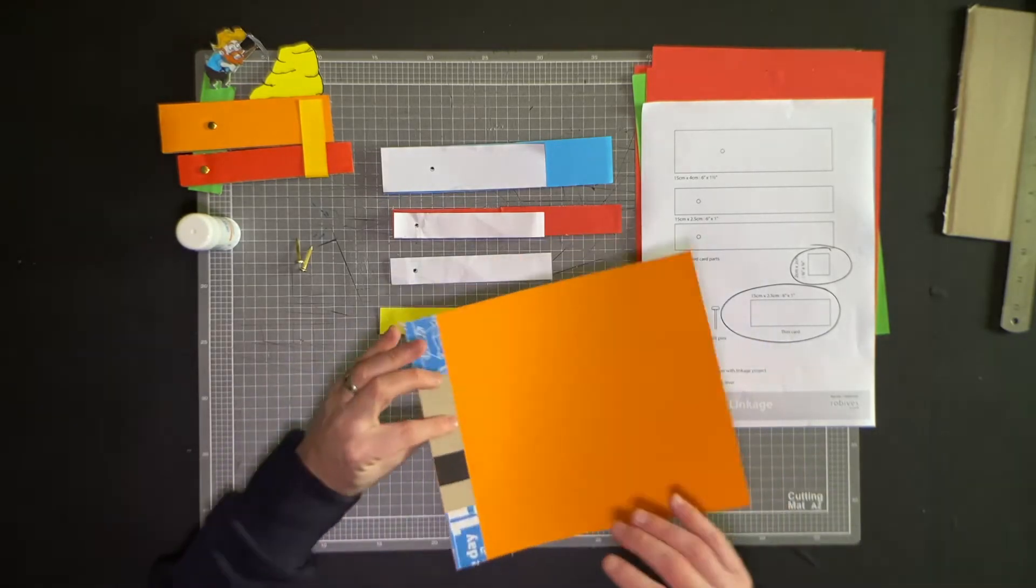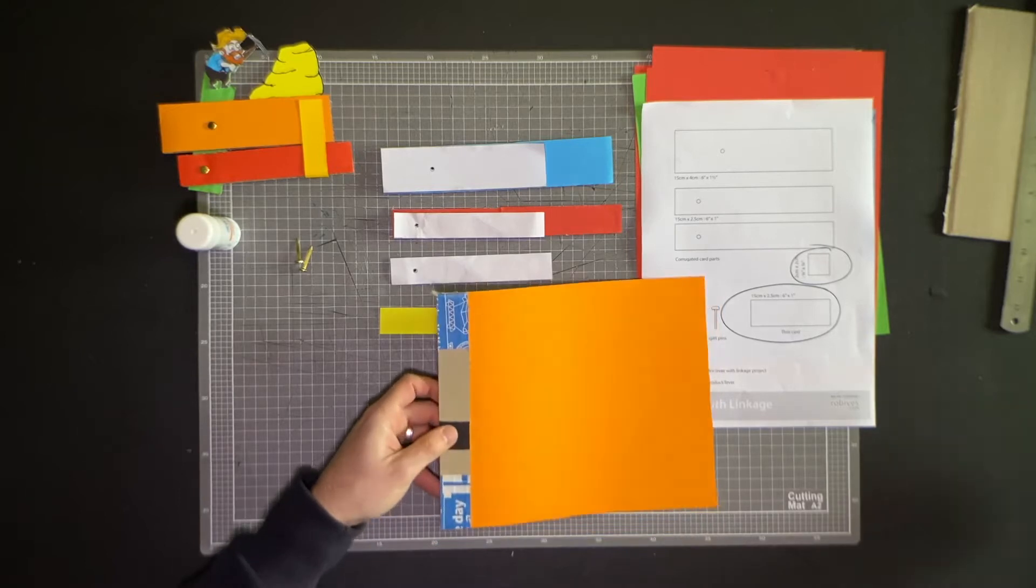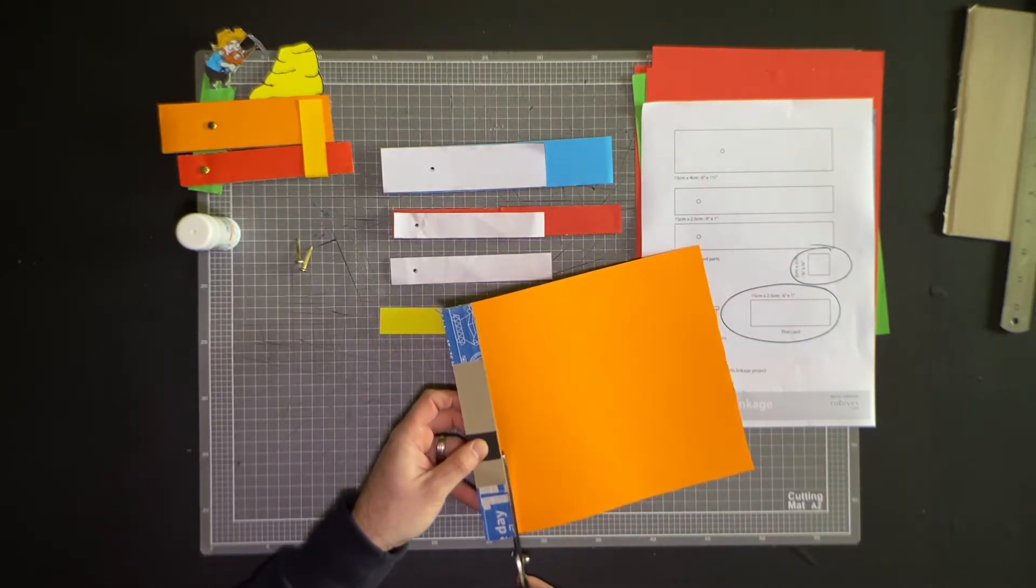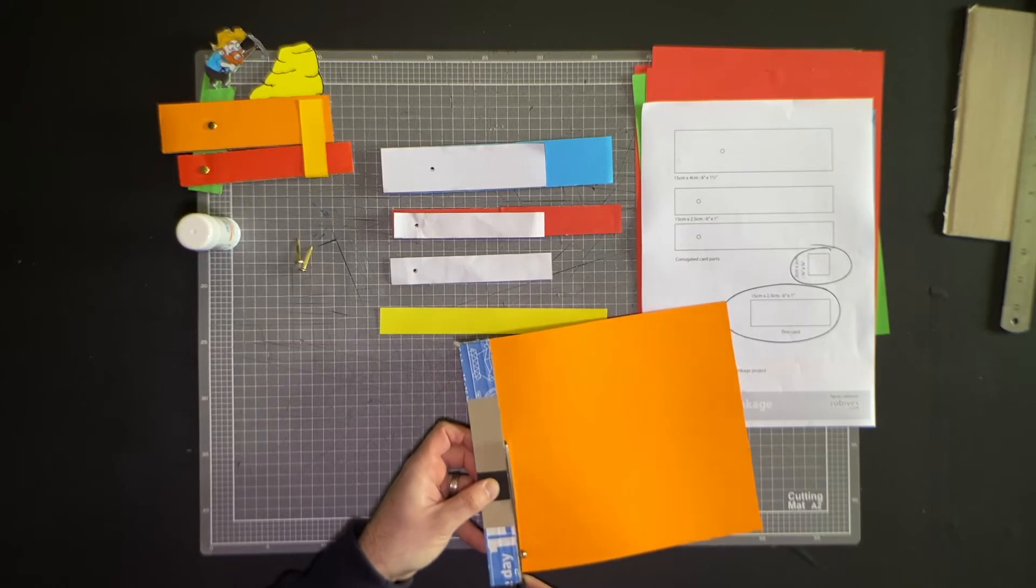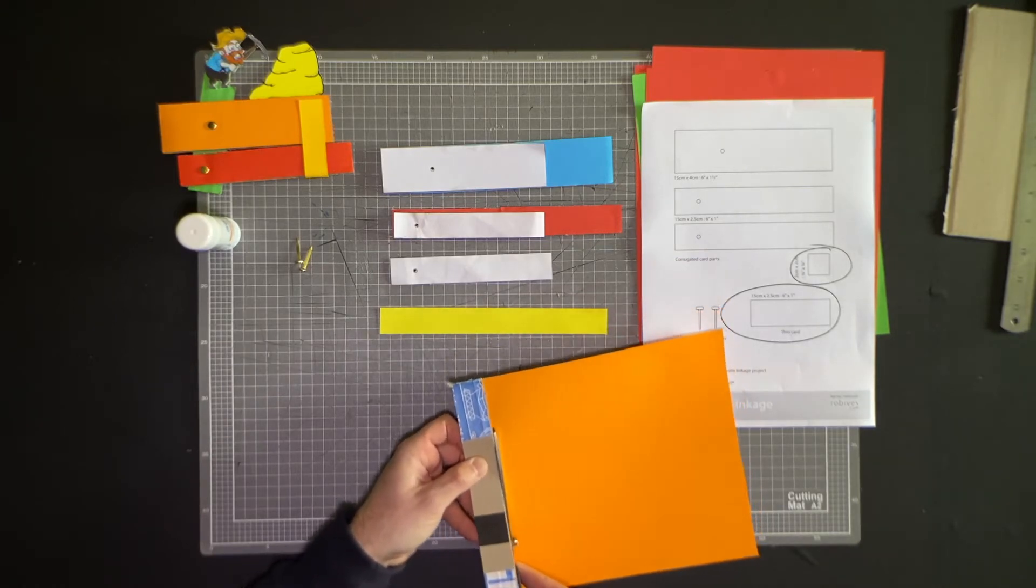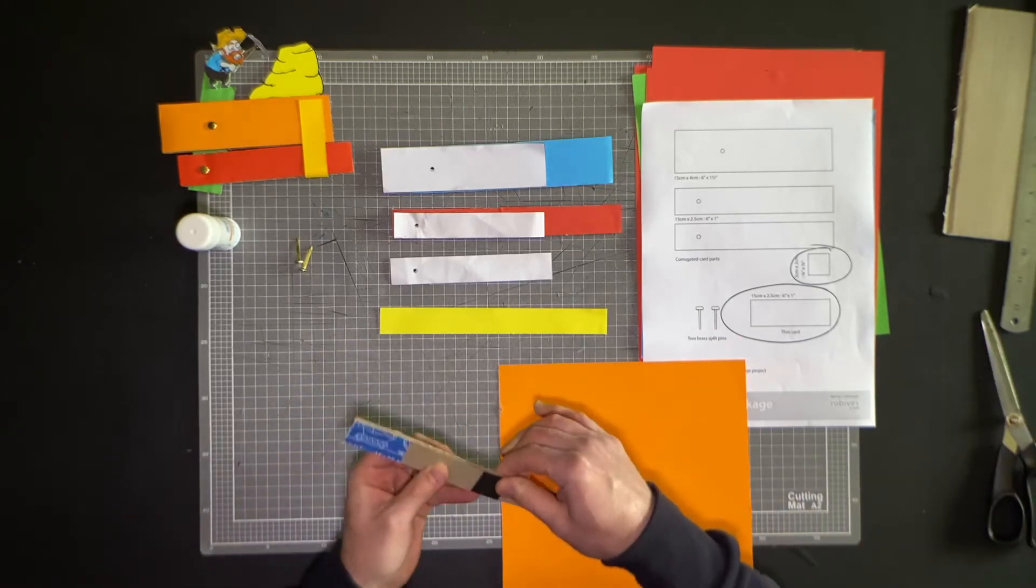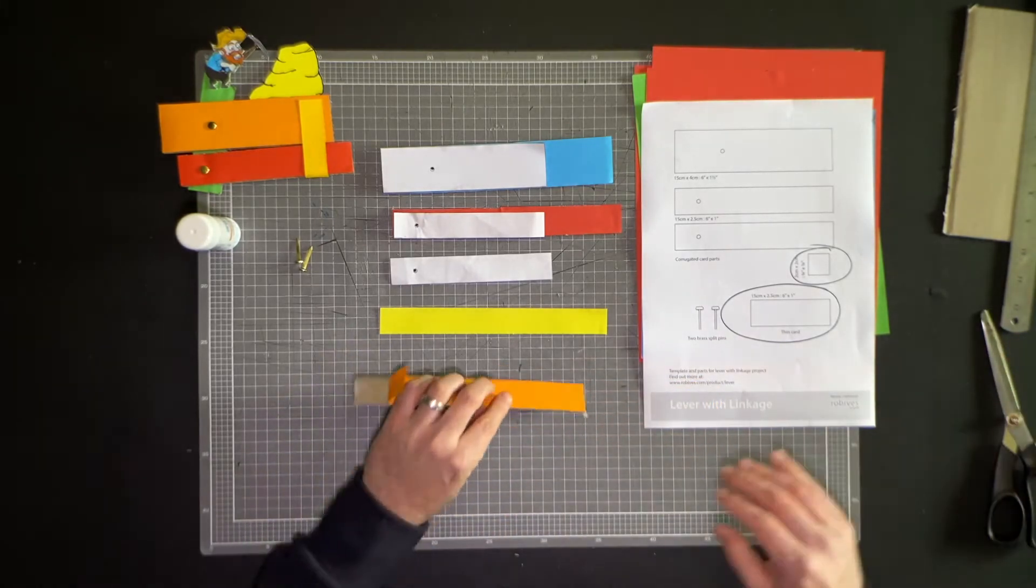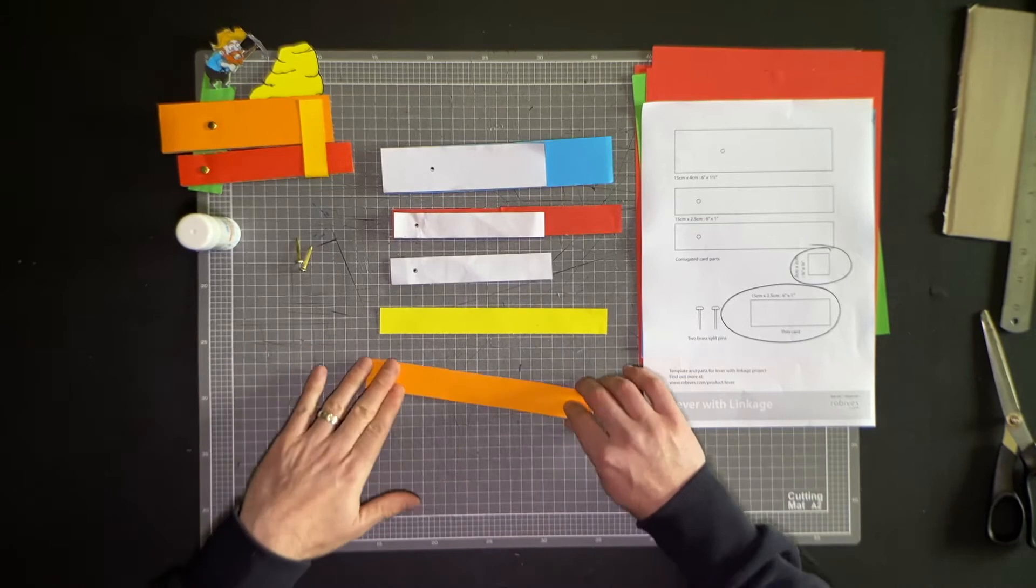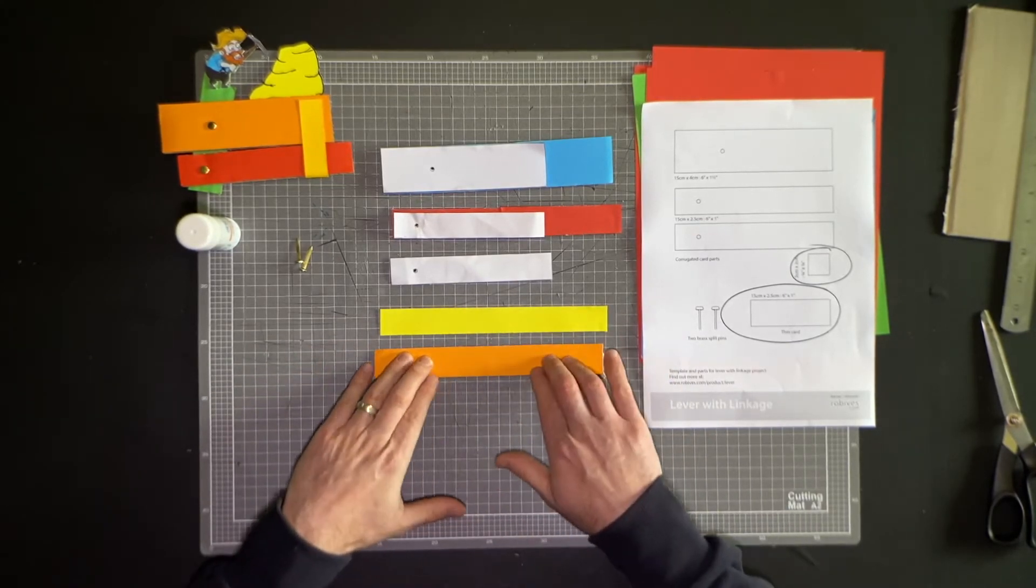Once you put that on, just flip it over, and you can see this was an old Amazon box, this piece of cardboard, and that's great for making these types of things. It's a single wall cardboard. It's really quite thick and stiff and great for making. That's how you get your colored card onto your cardboard.